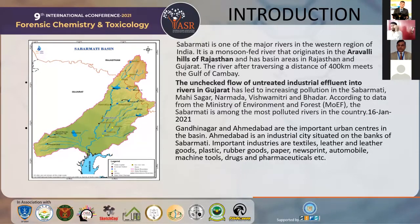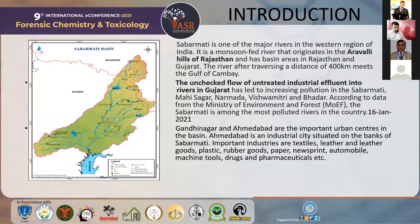According to data from the Ministry of Environment and Forest, the Sabarmati river is among the most polluted rivers in the country. This data is from June 6, 2021. We are going to test data from Ahmedabad and especially the Gujarat basin. Gandhinagar and Ahmedabad are important urban centers in this basin.